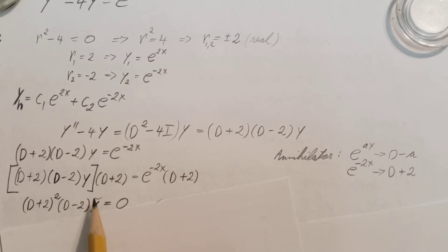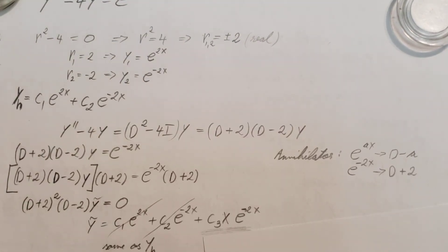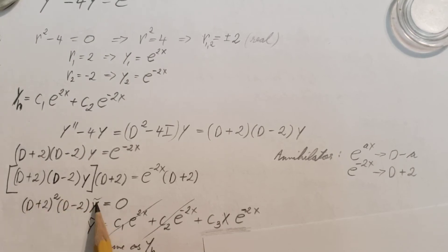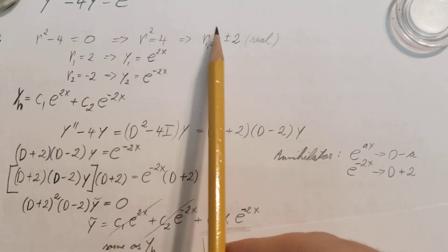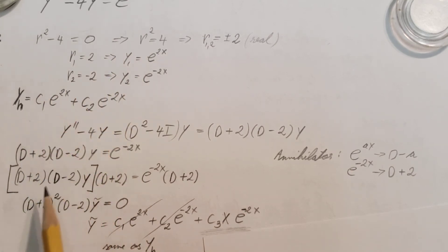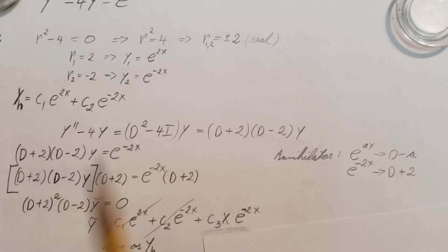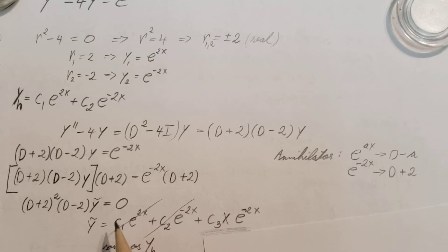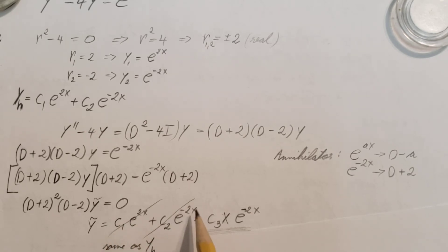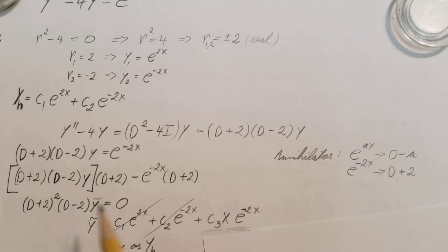I'm going to rename my y with a temporary label. Just like before, we had two roots and wrote the solution from them; we're going to do the exact same thing. We have three roots now: negative 2, negative 2, and positive 2. That gives me c1 e to the 2x, plus c2 e to the negative 2x, plus c3 x e to the negative 2x. We have that x because this root is repeating, so we put an x in front of it.